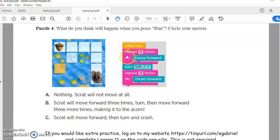So we have a repeat of three move forwards. One, two, three, a turn left, and then another move forward three times. One, two, three. So following this code means that letter B, Scrat will move forward, and he will make it to the acorn. So your answer for puzzle four is letter B. Scrat will move forward three times, then move forward three more times, making it to the acorn. And so, we'll see you next time.